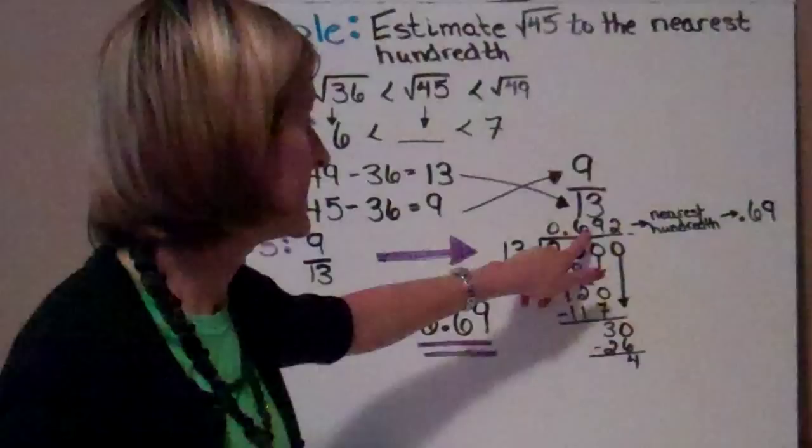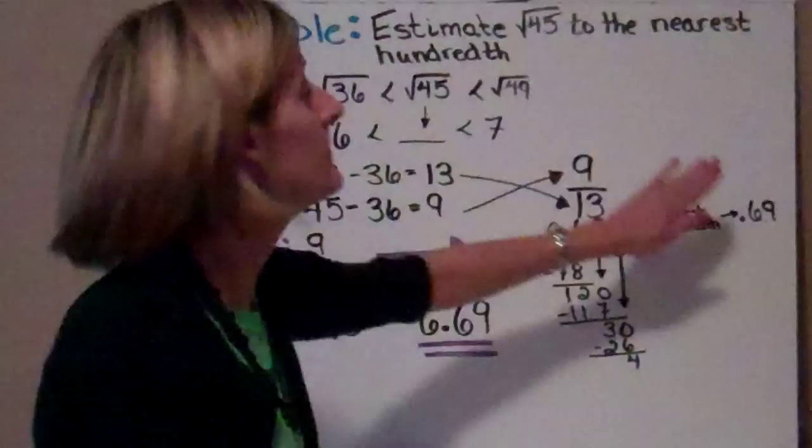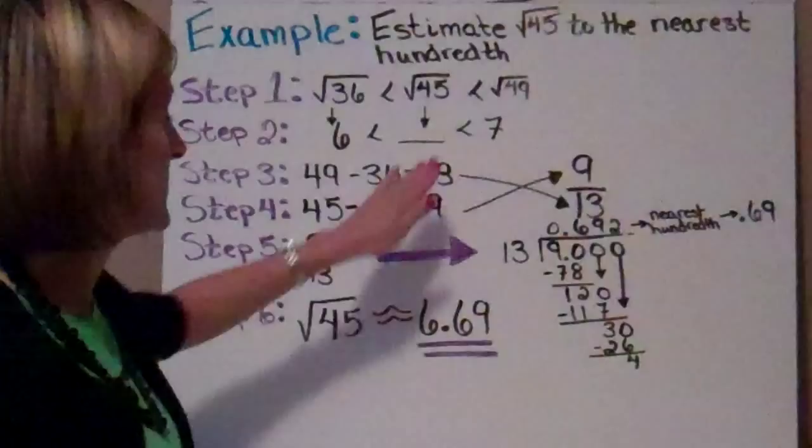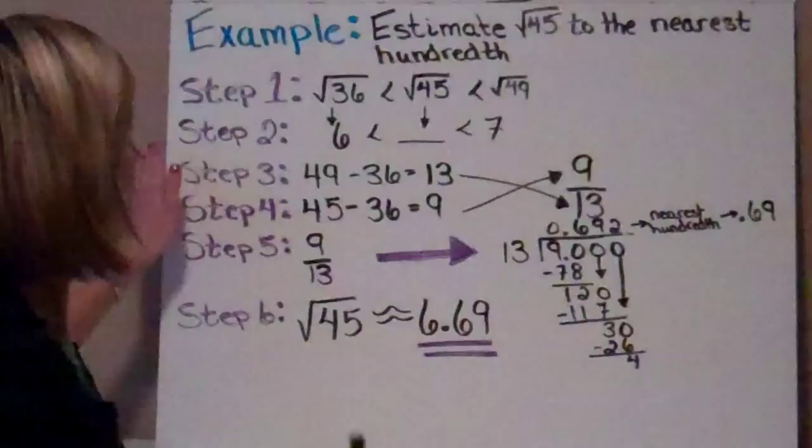Now that I have the decimal end of it, I go to step 6 where I take this decimal and the fact that I know it's 6 point something because it's between 6 and 7, and I put them together to get my estimate of the square root of 45 to be approximately — that's what these signs are — 6.69.